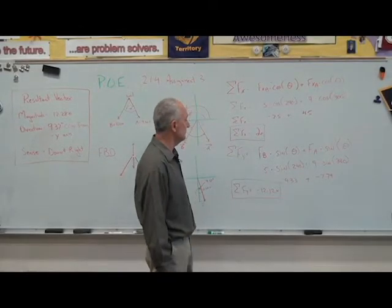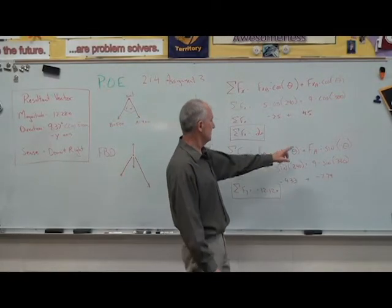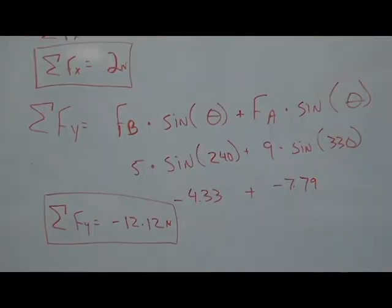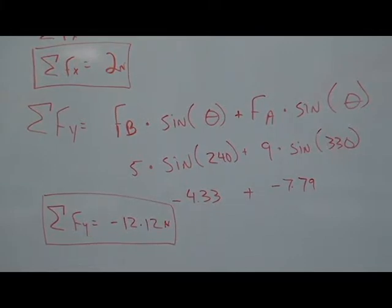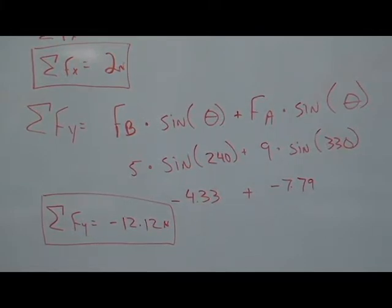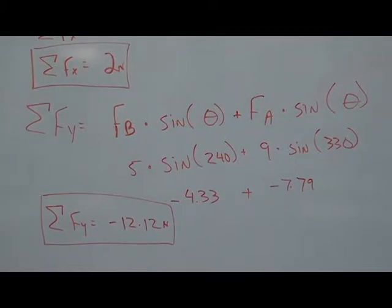Do the same thing for y. I sum them up. I have vector b and vector a, but now instead of using the cosine, I change it to the sine function. When I take the forces times the sine of the angles, I get negative 4.3 for vector b and negative 7.7 for vector a, which gives me a total of negative 12.12.